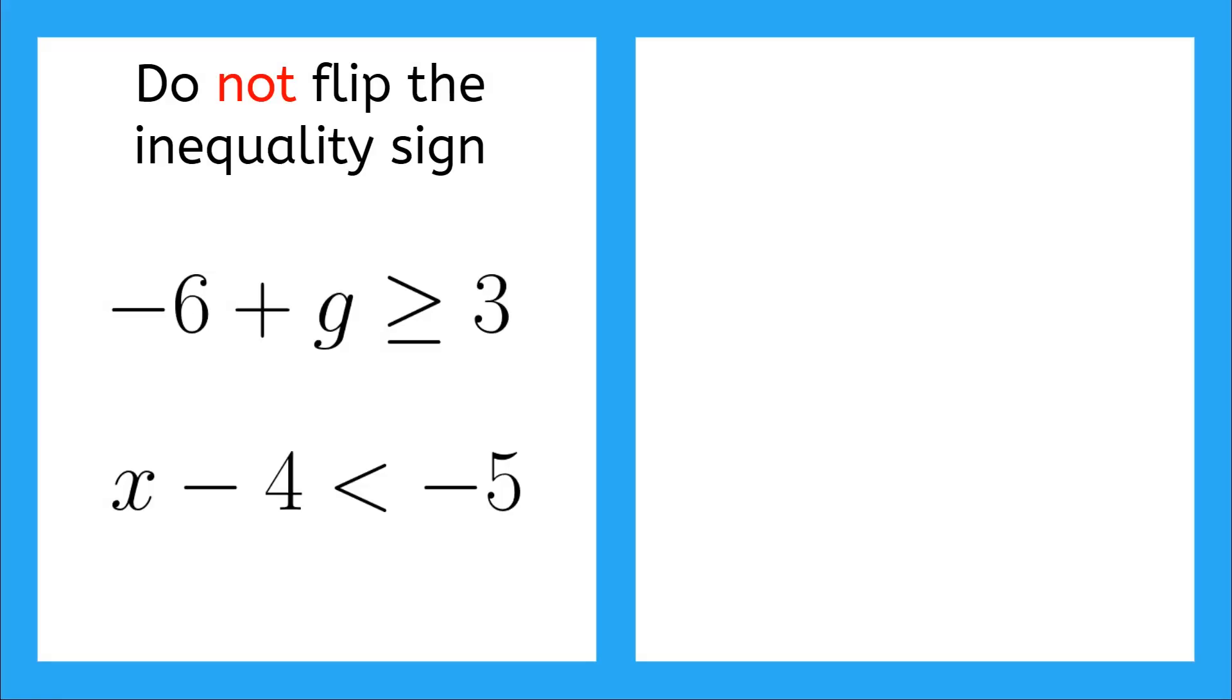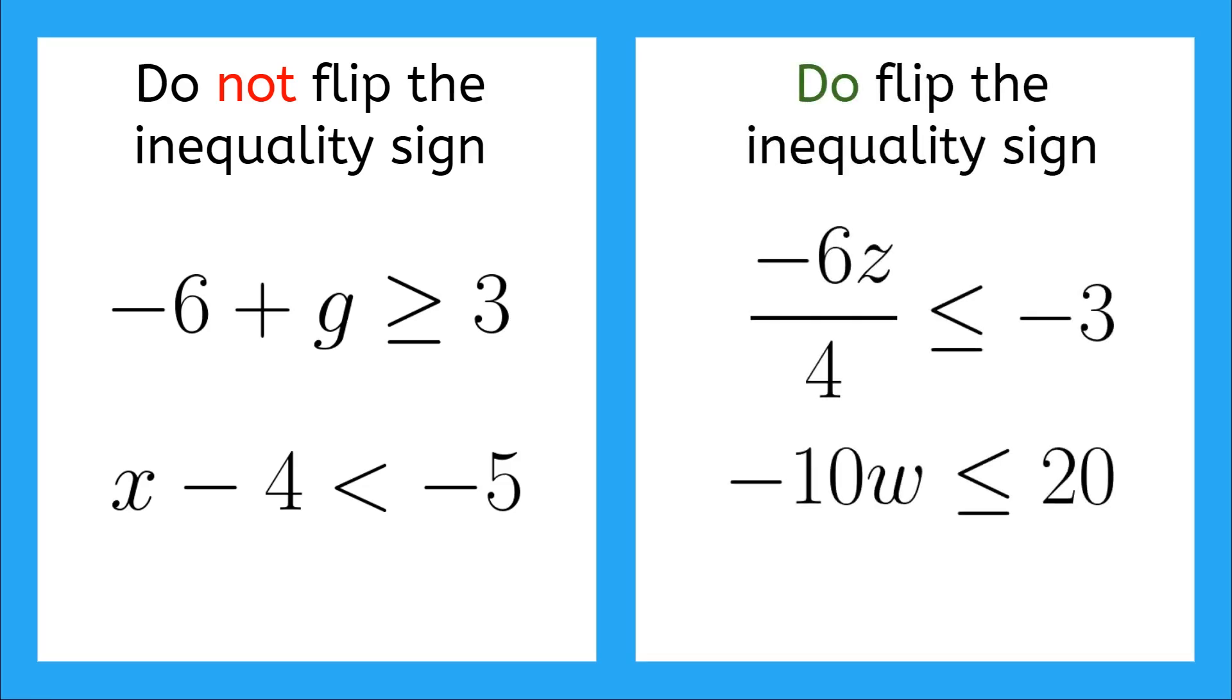Now, just to be clear, when we're working with one step inequalities with addition and subtraction that have negative numbers, we do not flip the inequality sign. We only flip the inequality sign when we multiply or divide by a negative number.